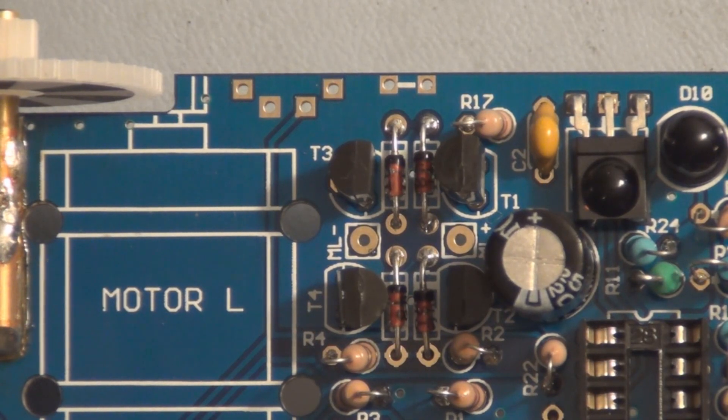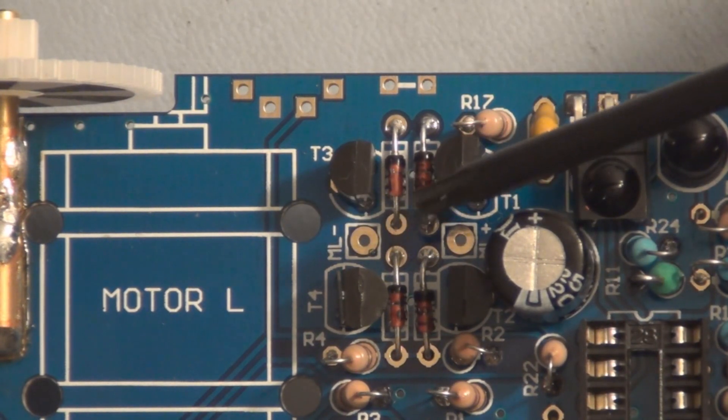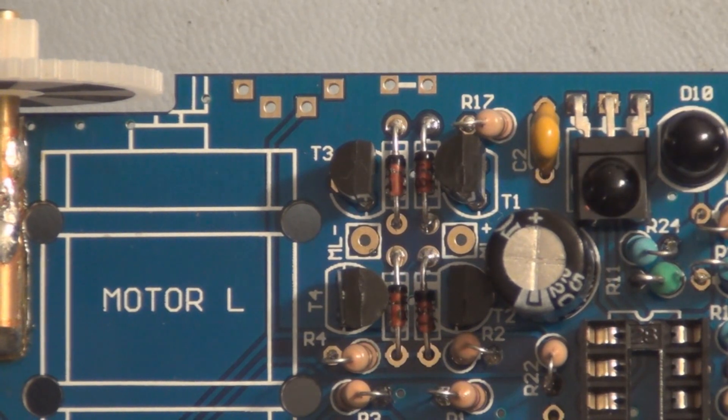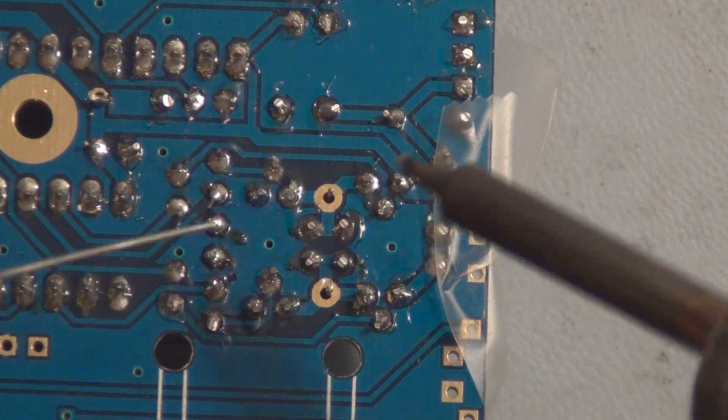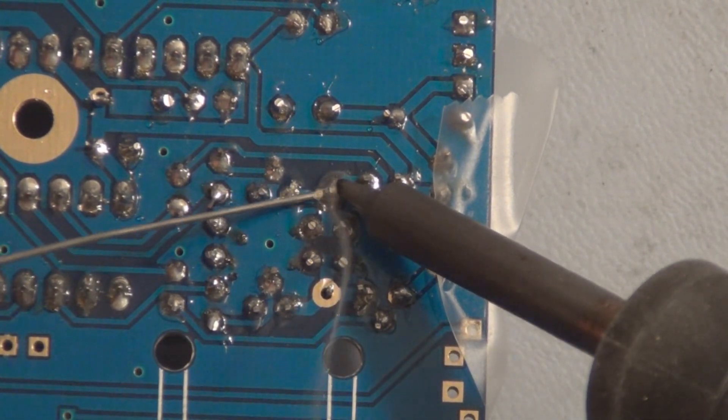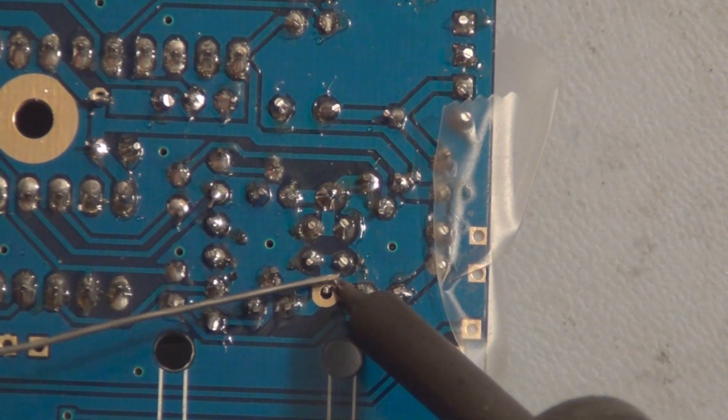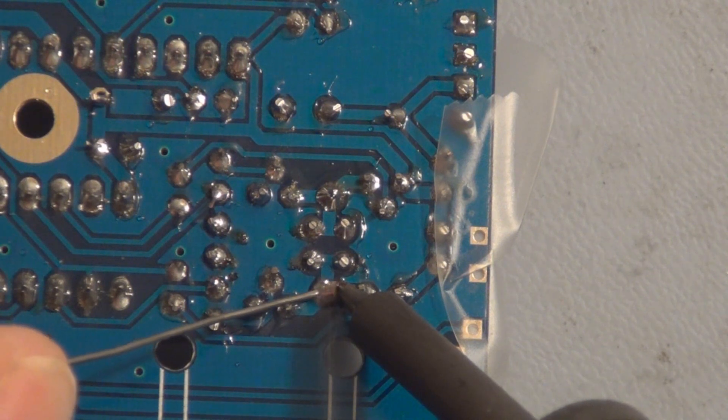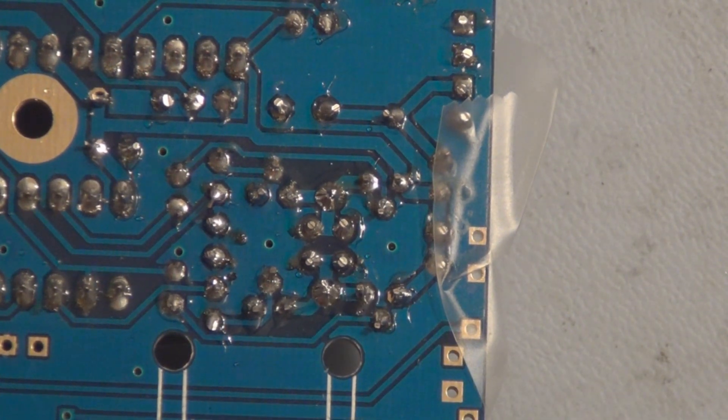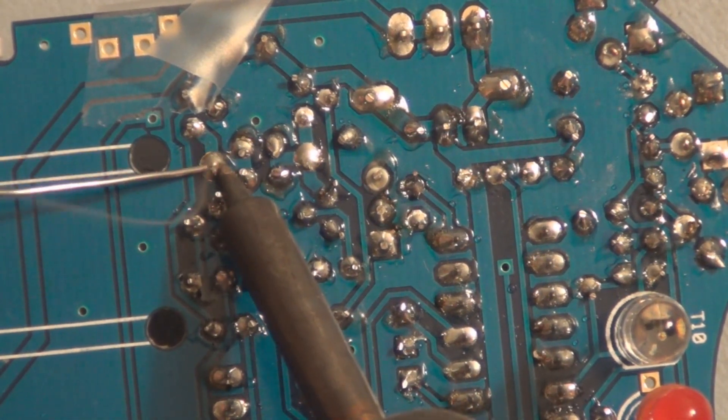On the PCB there are two connections for each motor. For the left motor here there's an ML negative and an ML positive. So I'll solder these two motors in. Here's the left motor connections, and here's the right motor connections soldered in.